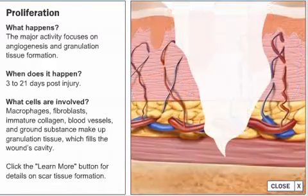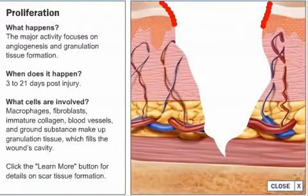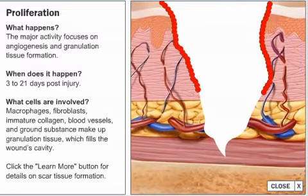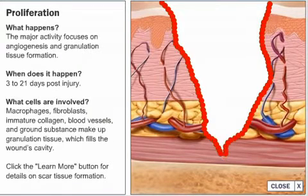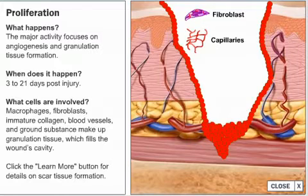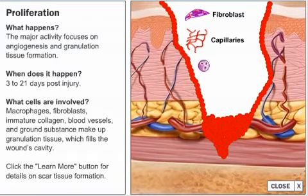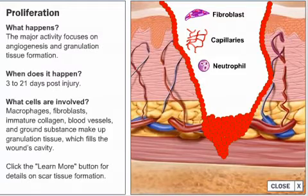In an open wound, granulation tissue is generated, producing red, beefy, shiny tissue with a granular appearance. This tissue consists of fibroblasts, capillaries, and neutrophils. As this type of tissue proliferates, fibroblasts stimulate the production of collagen, which gives tissue its tensile strength and structure.